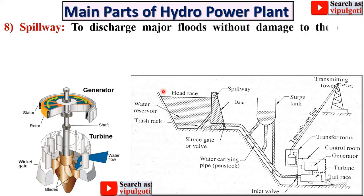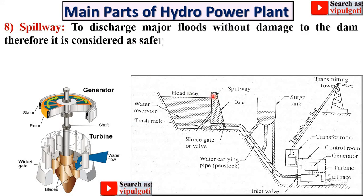Next: spillway. Here you can see this is the spillway, used to discharge major floods without damage to the dam. Therefore it is considered a safety valve. That means when the water level is beyond the limit, water automatically comes out from the water reservoir through the spillway, and the dam is automatically protected.